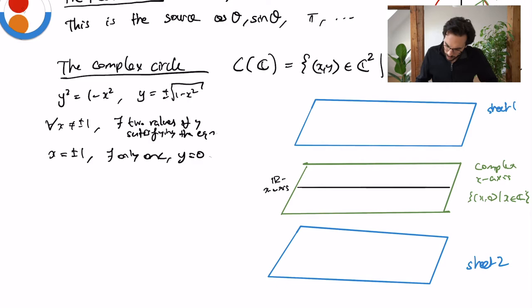But we know something: there are these two important points. Here I should have only one value of y not two because of the inside the square root I get zero. Meaning that this point and that point should be glued together, and similarly this point and this point should be glued together. And of course I already see my real circle here.